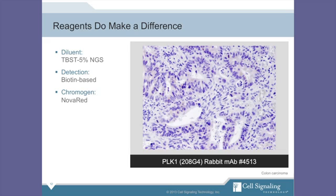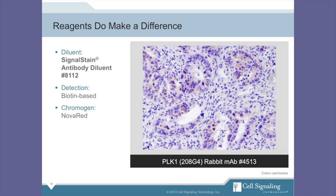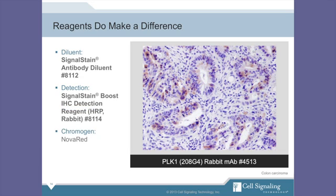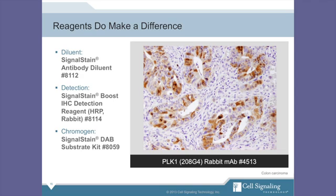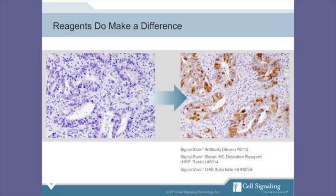I'd like to summarize this with a story that really highlights that reagents do make a difference. This PLK-1 antibody was released a number of years ago when we were using an older version of the IHC protocol. With TBST goat serum as the diluent and biotin-based detection, we were unable to see any staining with this clone. When we incorporated our Signal Stain Diluent, we started to see a signal, but clearly nothing sufficient to recommend this antibody for IHC. Then we incorporated Signal Stain Boost for detection and obtained more signal, but still not quite enough. Then, finally, with the incorporation of Signal Stain DAB as the chromogen, we have a very robust signal with this clone and are now able to recommend it for IHC. In summary, we went from no signal to robust signal using the same clone at the same dilution by only changing the reagents in the protocol. Reagents truly do make a difference.